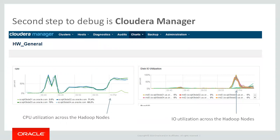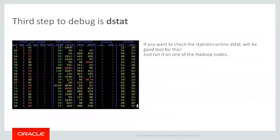In Cloudera Manager or Ambari, you can find CPU utilization per host and disk utilization across the hosts or even across disks. This information will help you answer the question of what's going on on the cell side. If you want to catch utilization in real time, you may use a Linux tool — you open it on any Hadoop node and you're able to see what's going on on your cluster: how your CPU is utilized, how your disk is utilized, what's going on on the network. It's like a dynamic picture of host utilization.